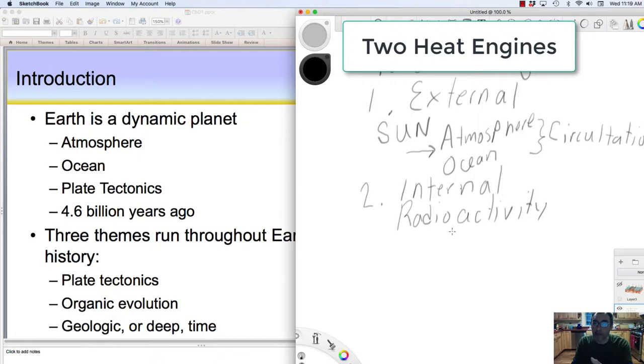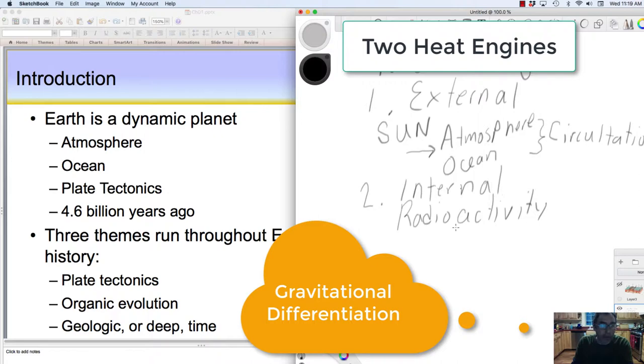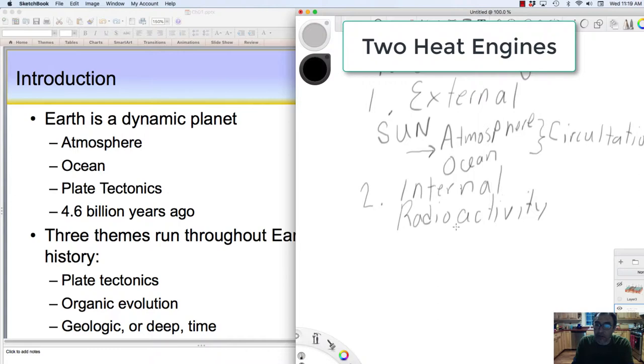Some of that internal heat engine is also driven by residual heat left over from when planet Earth formed. Today we're going to talk about gravitational differentiation, or a separation of components within the Earth, where the denser material sinks to form the core, primarily iron and nickel, and lighter materials rise to form the crust and mantle.